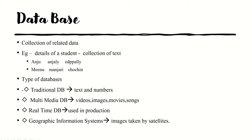There are various types of databases available, such as a traditional database, multimedia database, real-time database, and geographic information systems. They differ based on the type of data stored inside. The first category is the traditional database, which is commonly used in many applications.